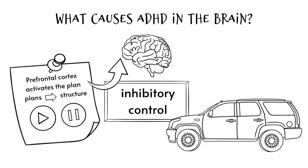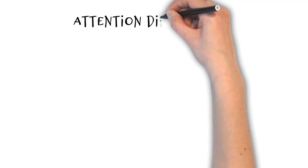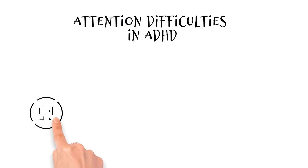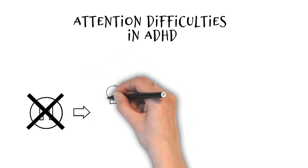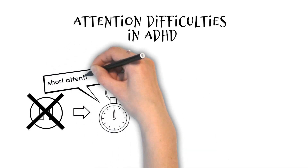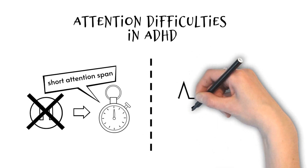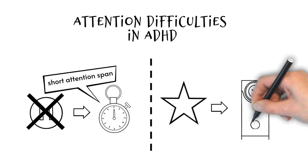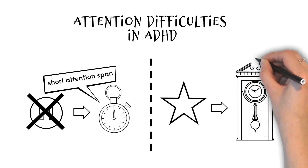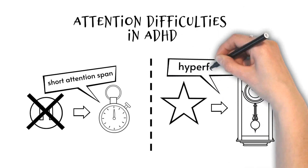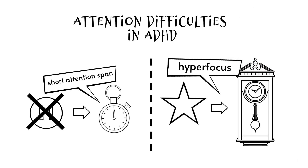Attention difficulties in ADHD can manifest in different ways. When the brain's braking system struggles to inhibit distractions, it can be difficult to keep attention on one task for a long period of time. However, if a particular activity is very rewarding, the brain's braking system can struggle to inhibit doing that rewarding activity. This causes a behaviour called hyperfocus, where it becomes difficult to stop doing one particular task.